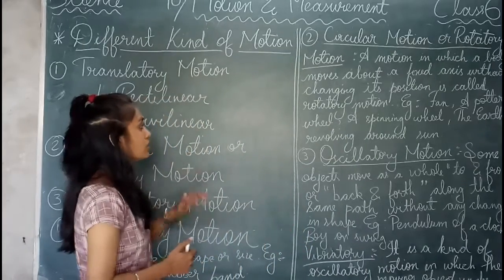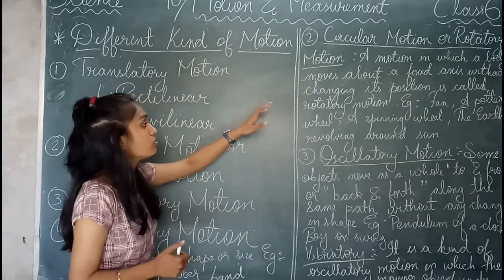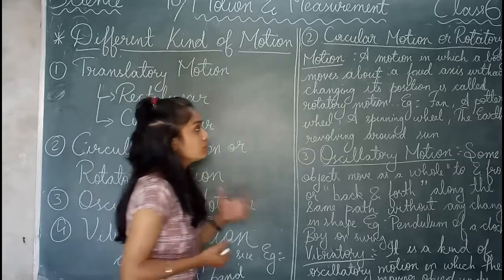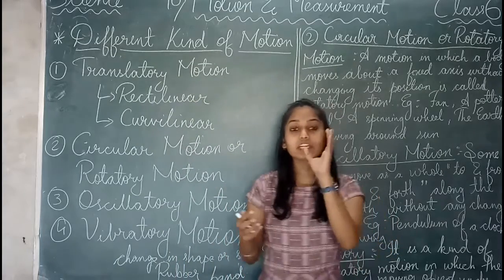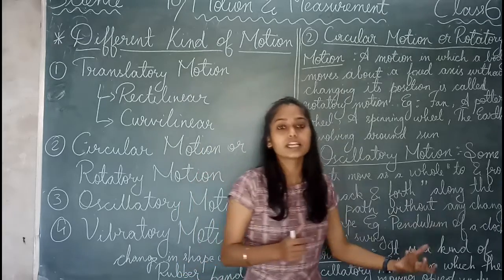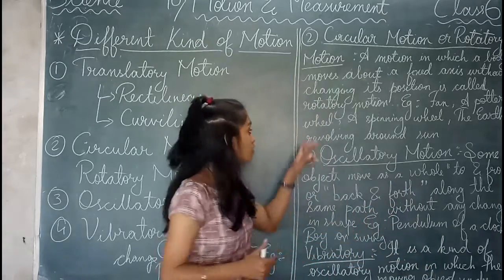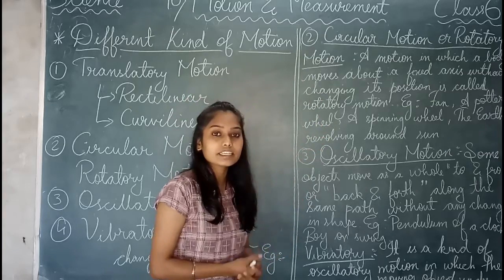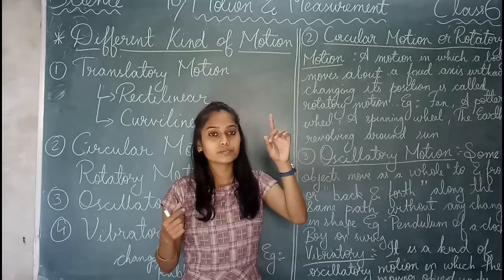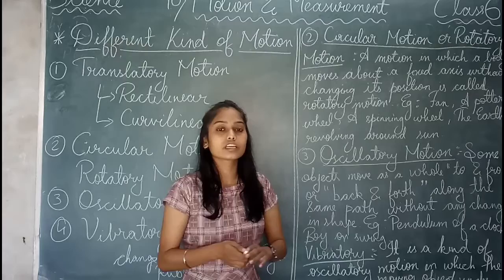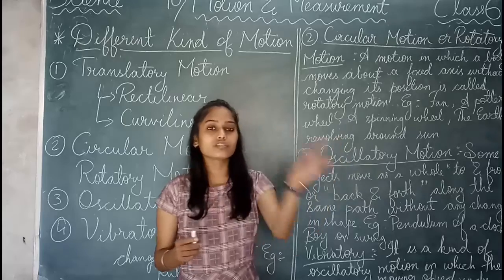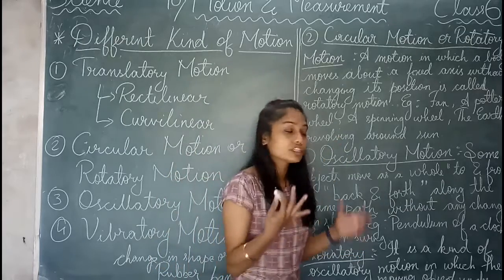Circular motion and rotatory motion: a motion in which a body moves about a fixed axis without changing its position is called rotatory motion. So what do we call that motion — rotatory motion or circular motion? For example, a fan's movement is known as circular motion and rotatory motion.